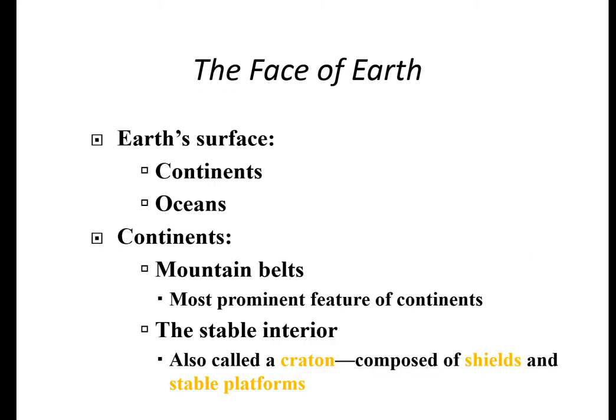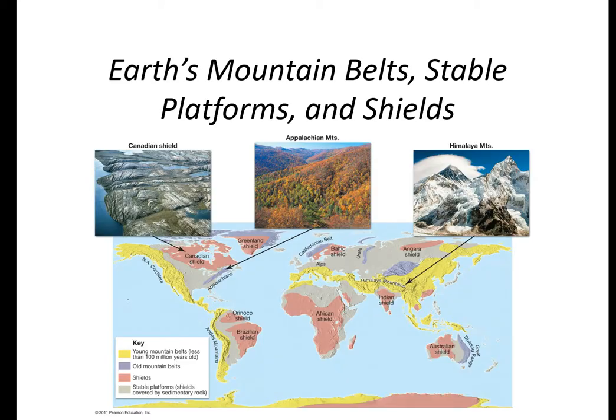What does the face of the Earth look like? We have seven continents and we have oceans. The continents have mountain belts — the most prominent feature — and a stable interior for most continents called a craton, composed of shields and stable platforms. Kind of like in the center of the United States there are no mountains, but you've got the Rockies and the Appalachians on either side. Here we have the Canadian Shield up in Canada, the Appalachian Mountains on the East Coast, and the Himalayan Mountains.